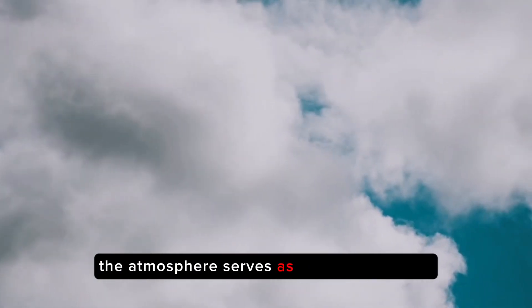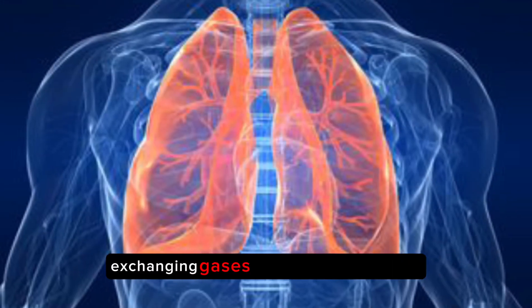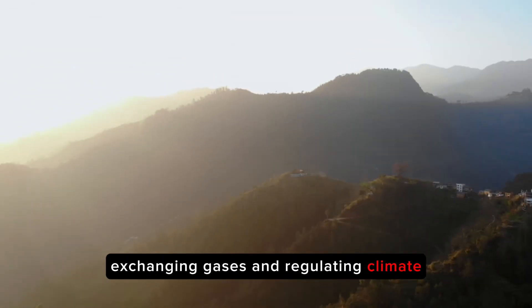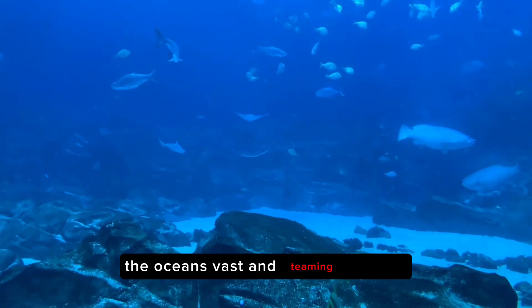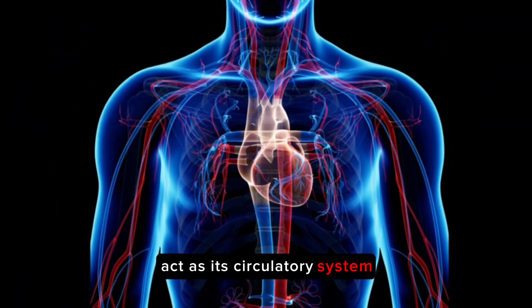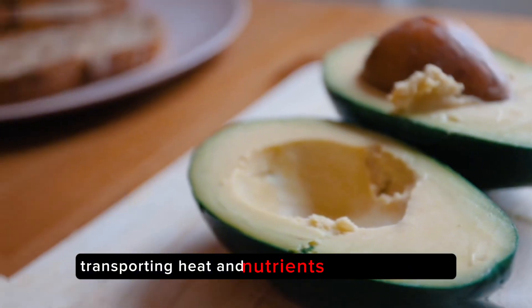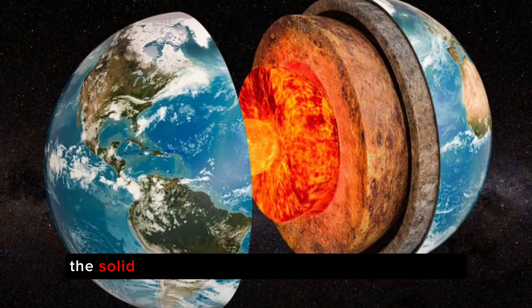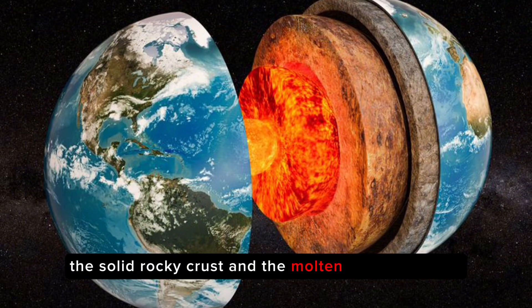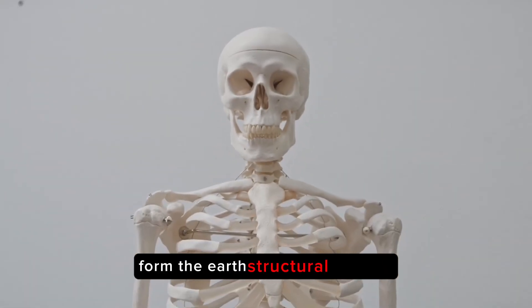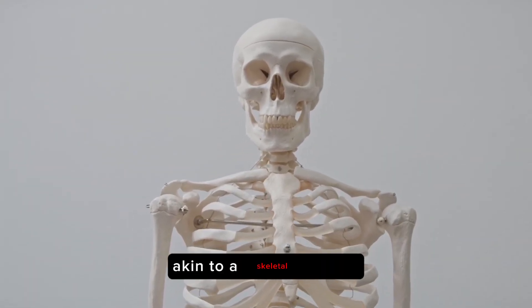The atmosphere serves as the planet's lungs, exchanging gases and regulating climate. The oceans, vast and teeming with life, act as its circulatory system, transporting heat and nutrients around the globe. The solid, rocky crust and the molten core beneath it form the Earth's structural skeleton, akin to a skeletal system.